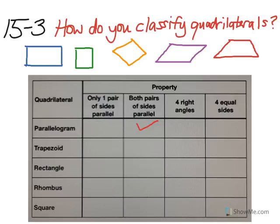A trapezoid has one pair of parallel sides. So we should check the first box for only one pair of sides parallel for a trapezoid. A rectangle is a parallelogram with four right angles. So on this one, we're going to check the second and third boxes. Both pairs of sides are parallel and four right angles for a rectangle.